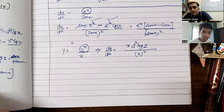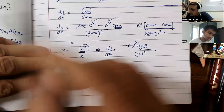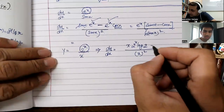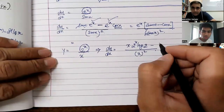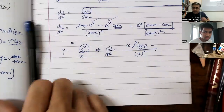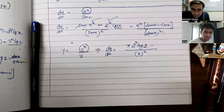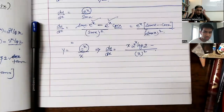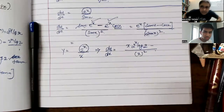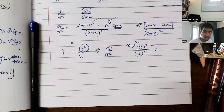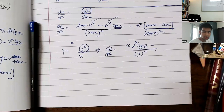Then minus 2x multiplied by 3 to the power x.